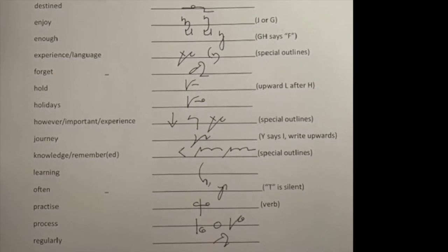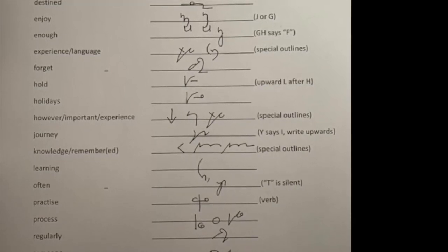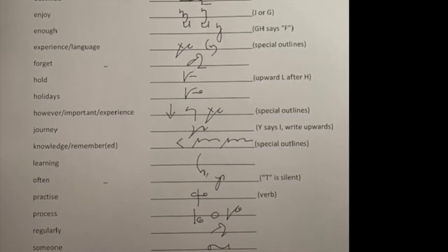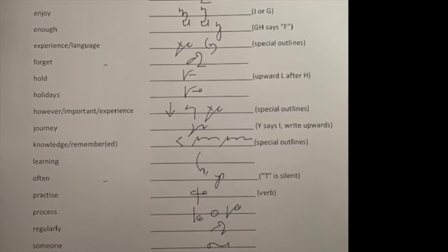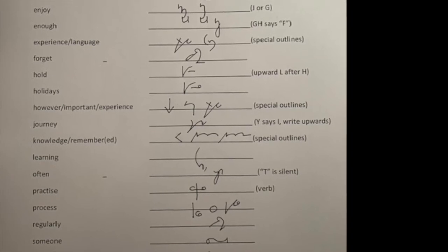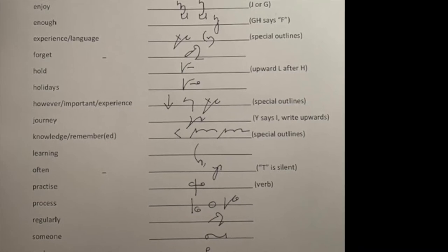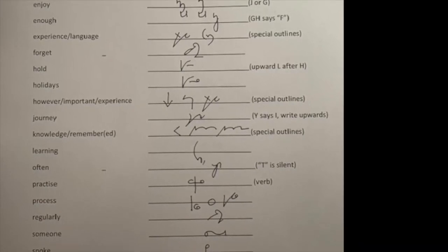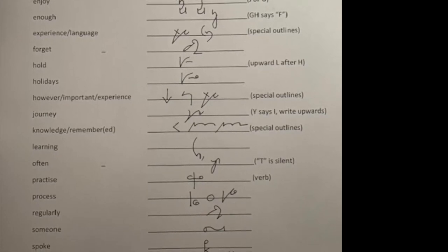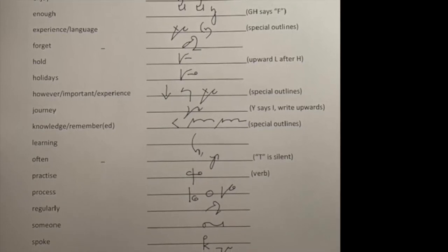Next one, learning. L doubles for R, N and the disjoined I for ing is written in a downwards direction. Often. We don't say often. We say often. So the T is silent. So I would go with that F down on the right-hand side, up on the left-hand side and sweep it over with the N. Practice it to get some speed on. It's a beautiful outline to write with speed. Practice. Now of course, we've got the verb to practice something with the S and we've got the noun which has got the C. So in this case, the outline has got the S on the end so it's the verb.